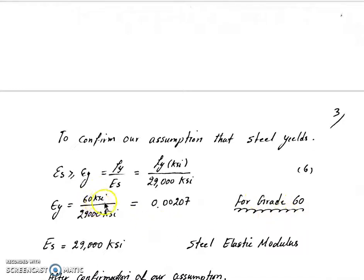fy has to be in ksi also. For Grade 60 rebar, fy is 60 ksi, so 60 divided by 29,000 ksi is 0.00207. If it's not greater than or equal to epsilon y, that means our assumption is not correct.